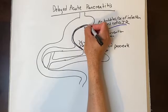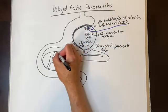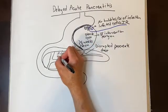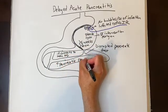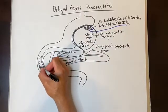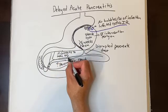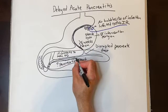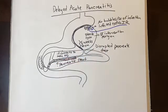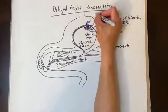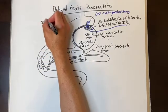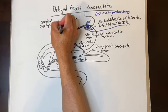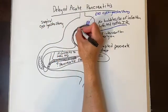For a mature sterile pseudocyst over six centimeters, do an MRCP or ERCP to see if it connects to the main pancreatic duct. If there is no connection, IR aspiration may work but has a high failure rate. If there is a pancreatic duct connection, discuss trans-papillary ERCP and pancreatic duct drainage; interventional GI can also do EUS-guided transgastric cyst drainage. On a surgical exam, you will likely be pushed to describe a surgical approach after failure of simple aspiration or ERCP with pancreatic duct stent.